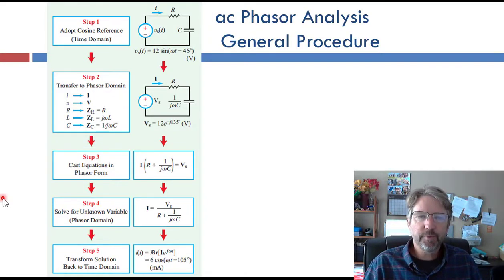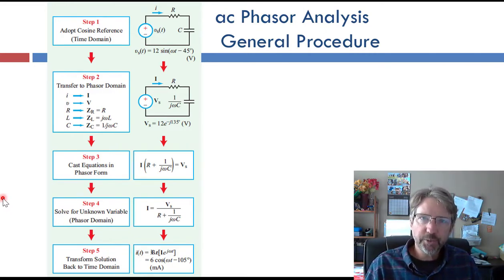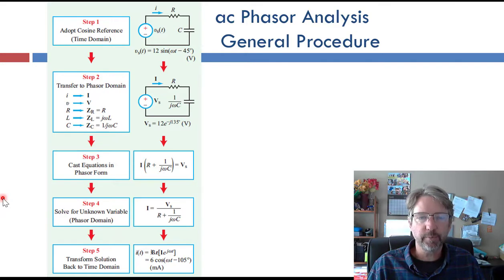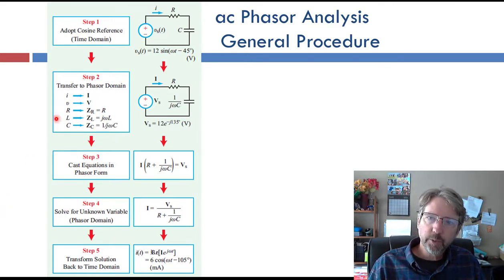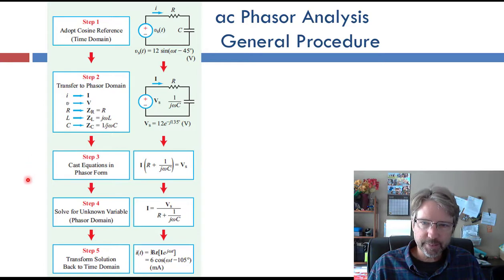Let's do some phasor circuit problems. I encourage you to try these yourself and especially to put all the numbers into your calculator to verify that you get the same solutions, because doing the math part is the trickier part. The circuits is hopefully just a review of the kind of circuit analysis we've done before using resistors. We put everything in cosine format, then we write down the impedances of all the components — resistors, inductors, capacitors — all treated the same as impedances. That lets us write everything as a phasor and do the circuit analysis in the phasor domain.